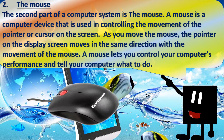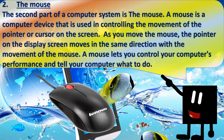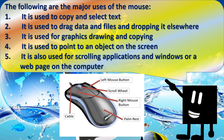The second part of a computer system is the mouse. A mouse is a computer device used to control the movement of the pointer or cursor on the screen. As you move the mouse, the pointer on the display screen moves in the same direction. The major uses of the mouse are: 1. It is used to copy and select text. 2. It is used to drag and drop data and files. 3. It is used for graphics drawing and copying. 4. It is used to point to an object on the screen. 5. It is used for scrolling applications, windows, or a web page.